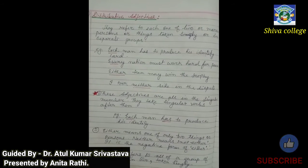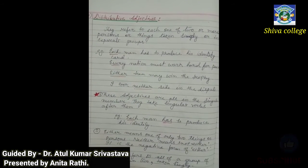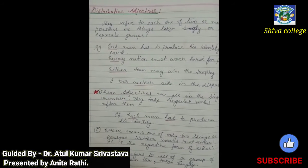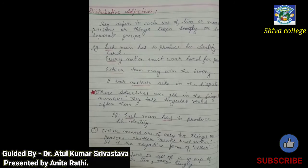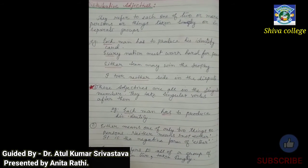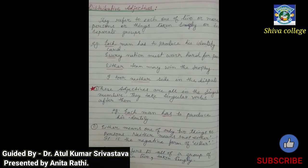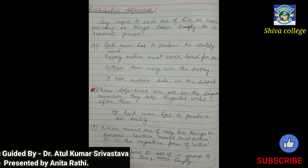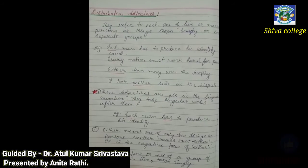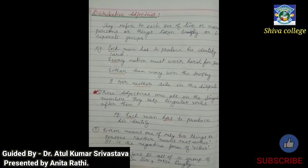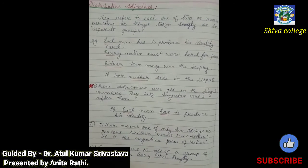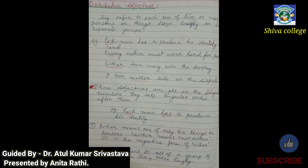For example, 'each man has to produce his identity' — when we use the word 'each' we always use a singular verb; here it is 'has'. Either means one of only two things or persons. Neither means not either — it is the negative form of either. Here also we will use a singular verb.